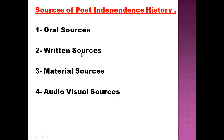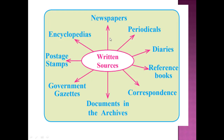Written sources mean information in written form, like newspapers, magazines, and periodicals. The types of written sources include newspapers, periodicals, diaries, reference books, correspondence, postage stamps, and encyclopedias. An encyclopedia is a book containing a large amount of general knowledge. Postage stamps — in today's world of internet and telecommunications, messages travel in seconds, but previously people had to physically send letters through a post office using postage stamps as tickets.